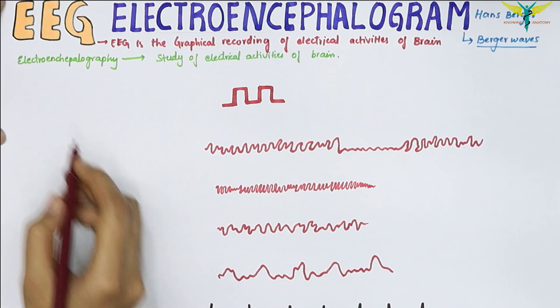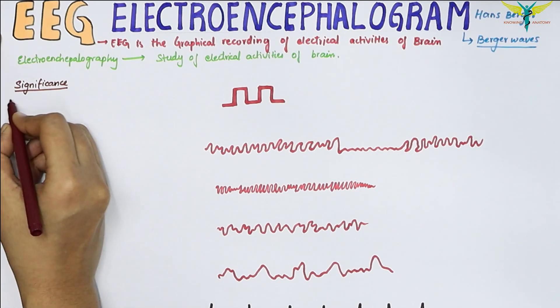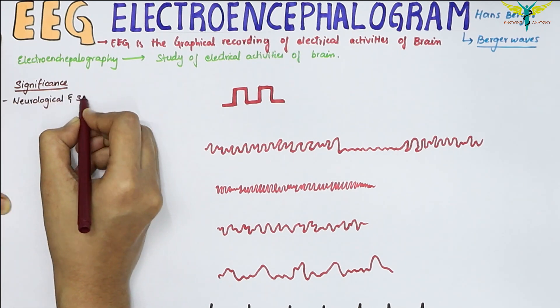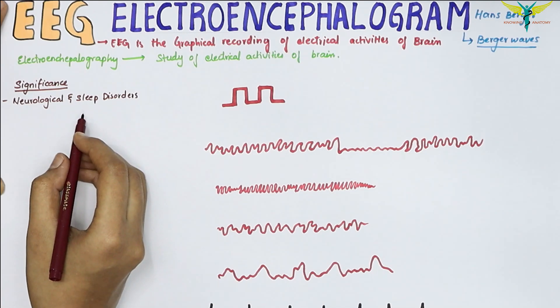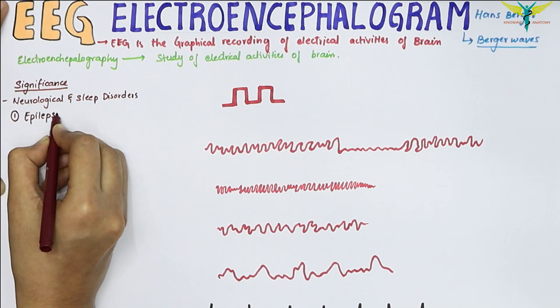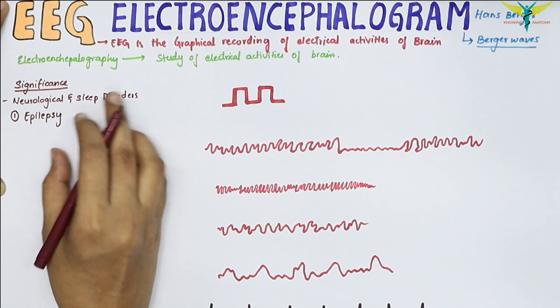The EEG is useful in the diagnosis of neurological disorders and sleep disorders. The pattern of the EEG is altered in epilepsy, which occurs due to the excessive discharge of impulses from the cerebral cortex.